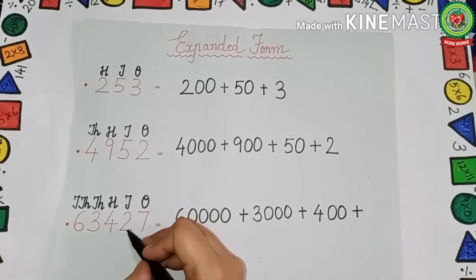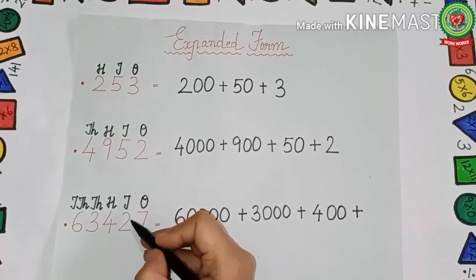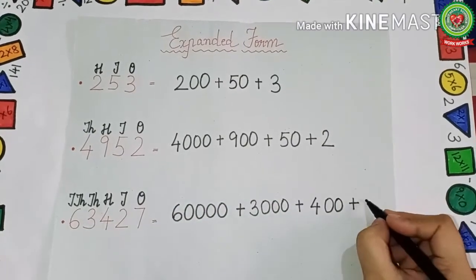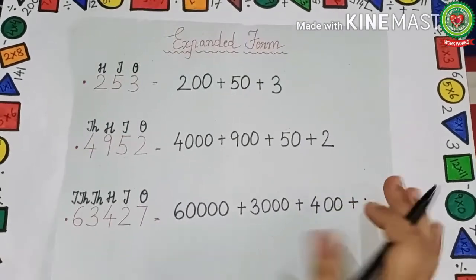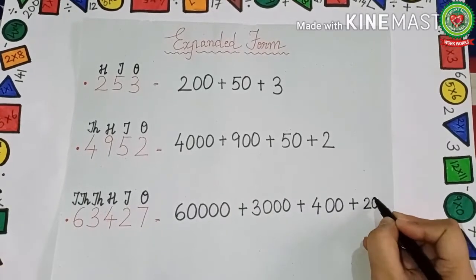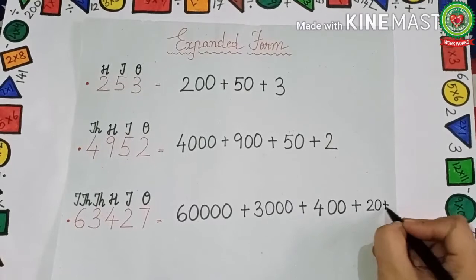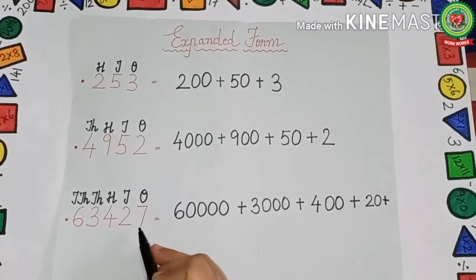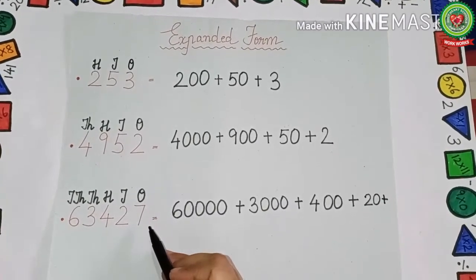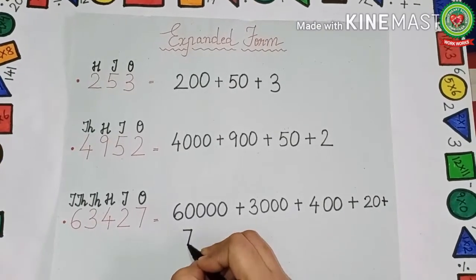Two is under tens, tens has one zero, so we write 2 with one zero — that is 20. Seven is under ones, ones has no zero, so we simply write 7. So 63427 = 60000 + 3000 + 400 + 20 + 7.